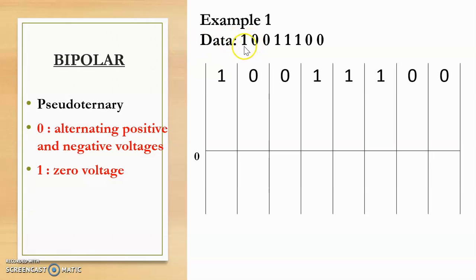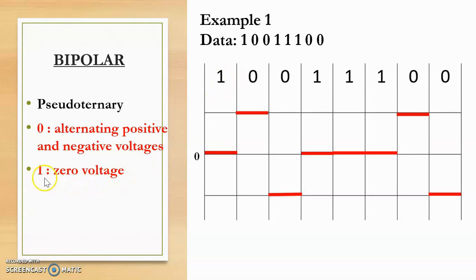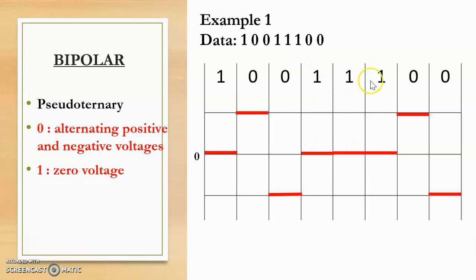Say for example the data is 1 0 0 1 1 1 0 0 and we need to convert it using pseudo ternary. The first bit is 1, and 1 means 0 voltage, so it is on the reference line. The next bit is 0 — alternating positive and negative voltages; since this is the first 0 in the sequence we assume positive logic and represent it as positive voltage. The next bit is 0 and since the previous 0 was positive, this will be negative. The next three bits are all 1, so each is represented as 0 voltage on the reference line.